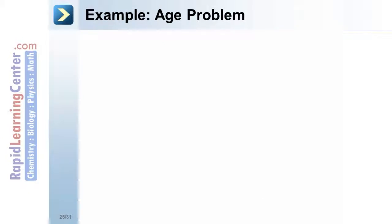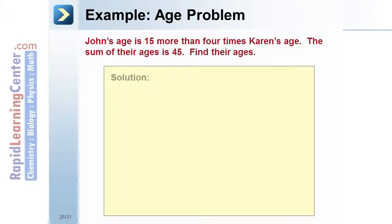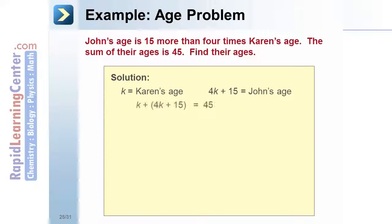Age problem example: John's age is 15 more than 4 times Karen's age. The sum of their ages is 45. Find their ages. Solution: let k equal Karen's age. It follows that 4k plus 15 equals John's age. The sum of their ages can be represented as the equation: k plus 4k plus 15 equals 45.